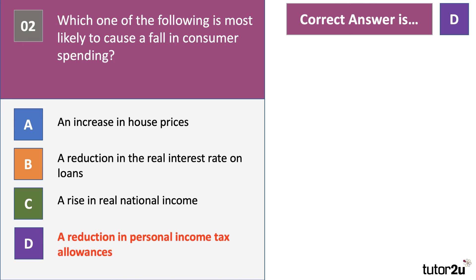The best answer here is D — a reduction in personal income tax allowances. If house prices go up, in theory that increases household wealth, which might cause people to have greater confidence to borrow and spend more. A fall in the real interest rate on loans encourages increased demand for credit. A rise in real incomes allows people to have more purchasing power. But if tax allowances go down — the income you can earn before you start paying tax — people will end up paying more direct taxes and therefore have less money to spend on goods and services.